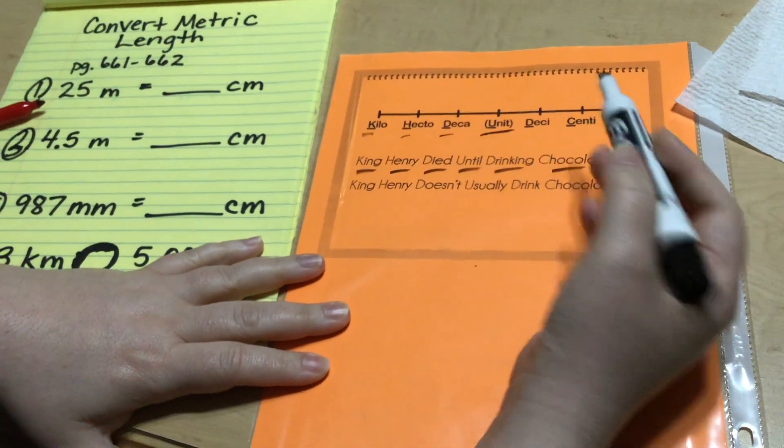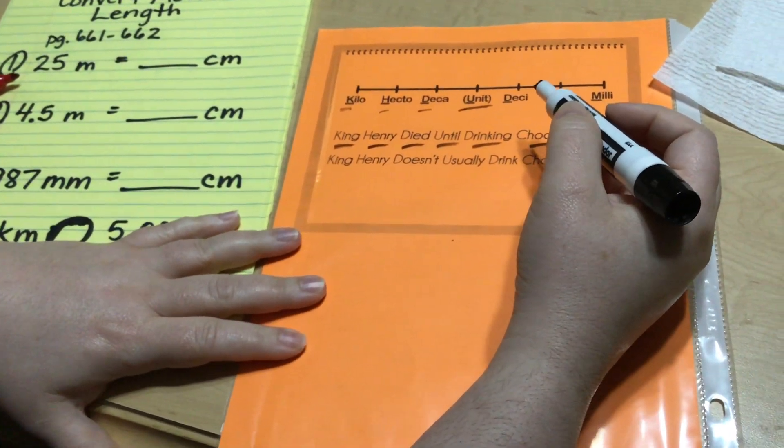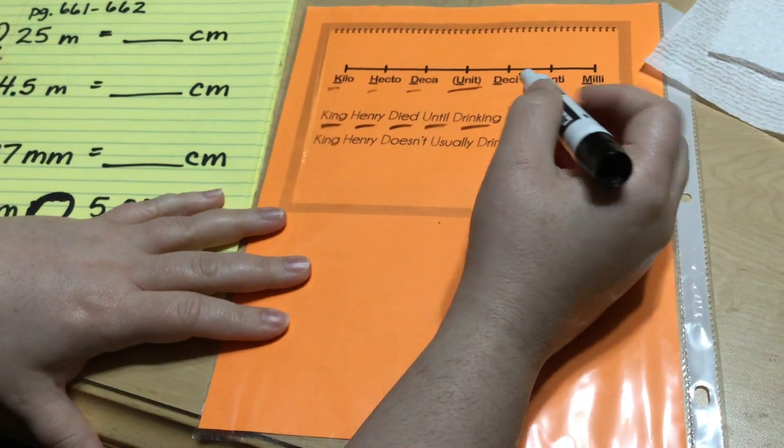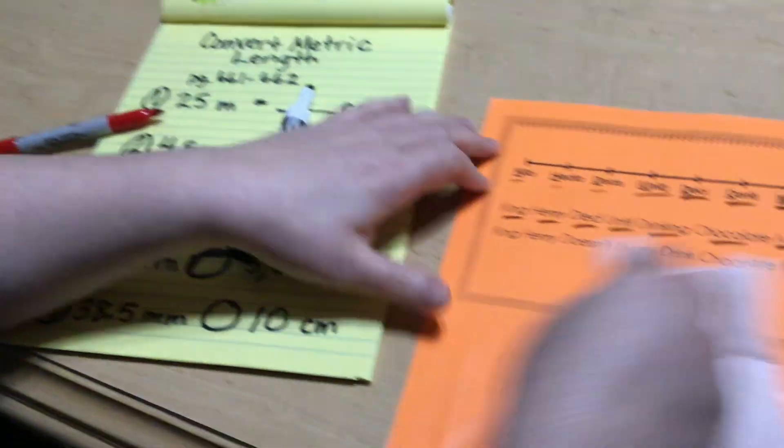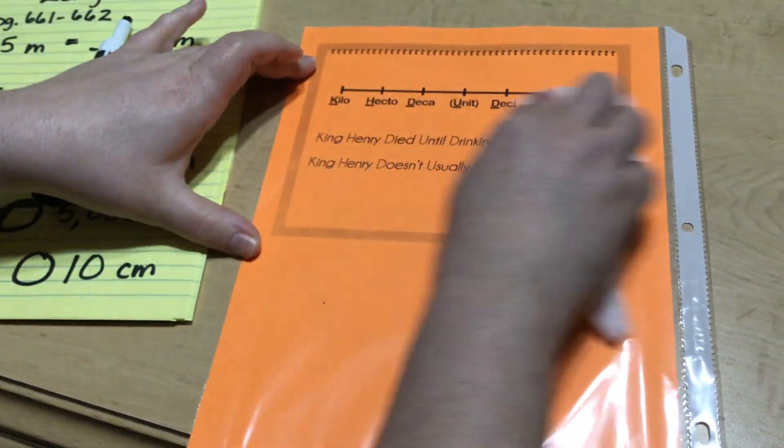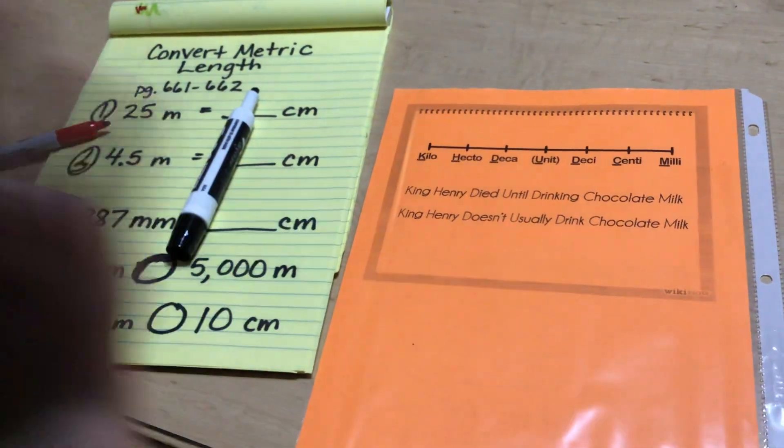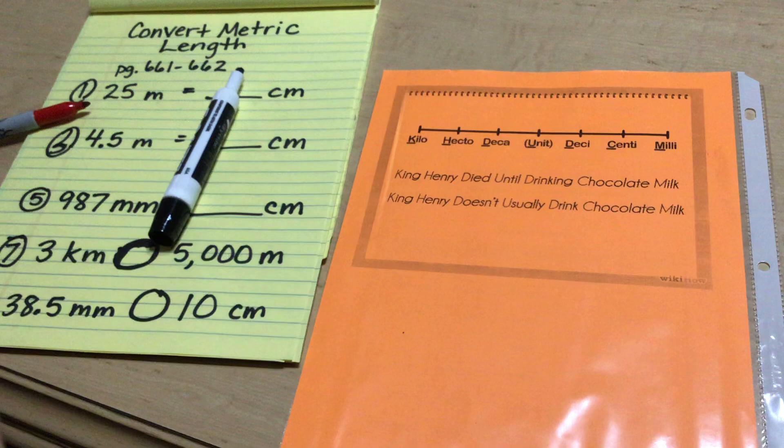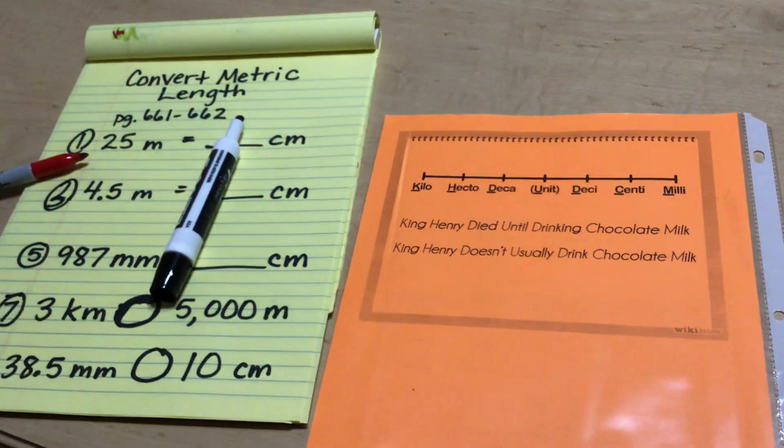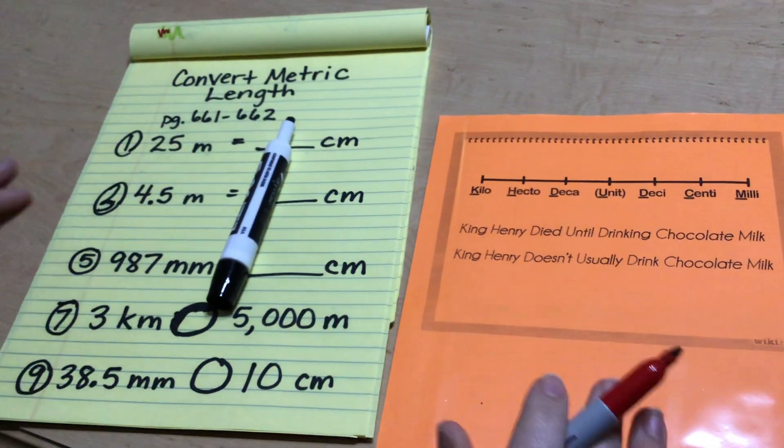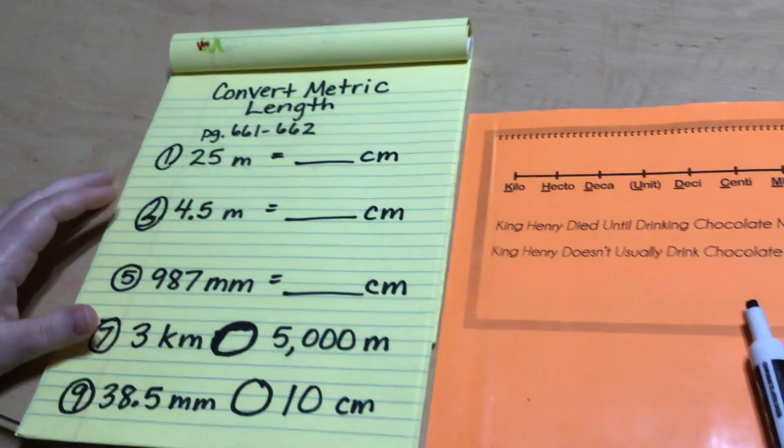Today we learned about the metric system and our cool little trick which is King Henry died until drinking chocolate milk. We learned that those each stand for kilo, hecto, deca, whatever the unit is. The unit might be meters or liters or grams depending on if you're measuring length or capacity or mass. Then comes deci, centi and milli. So I taught you guys that you can use this little trick, King Henry died until drinking chocolate milk, to easily convert back and forth between different units of metric measurement.